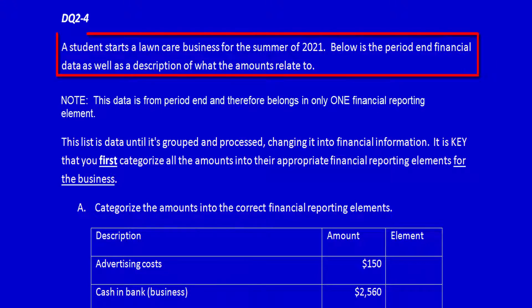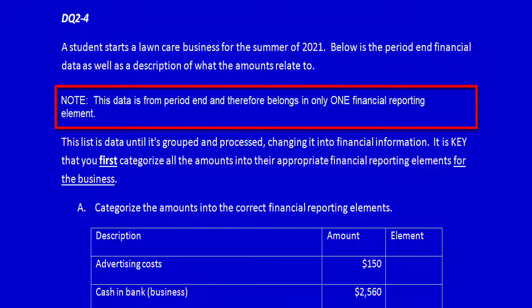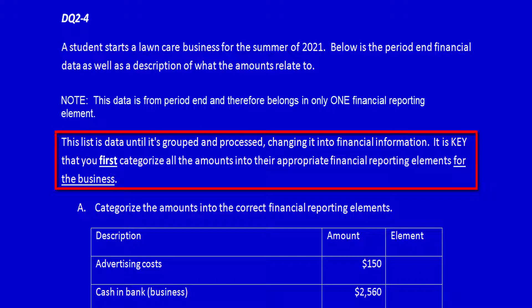Demonstration Question 2-4: A student starts a lawn care business for the summer of 2021. Below is the period-end financial data, as well as a description of what the amounts relate to. Note, this data is from period end and therefore belongs in only one financial reporting element. Each of these is simply a balance at the end of the period — this list is data until it's grouped and processed, changing it into financial information.